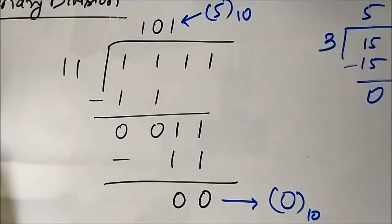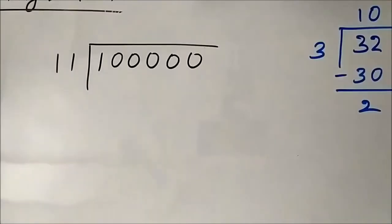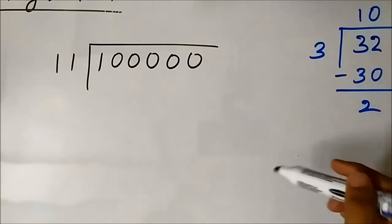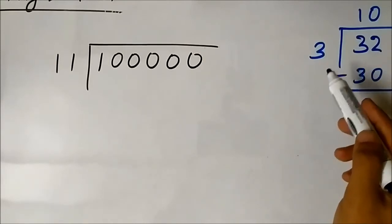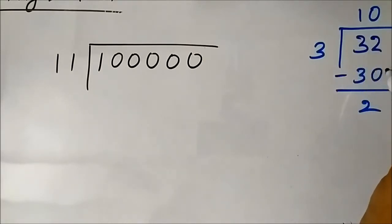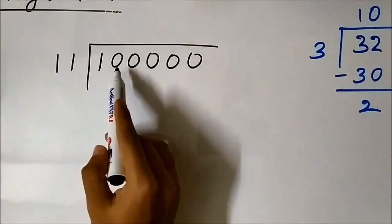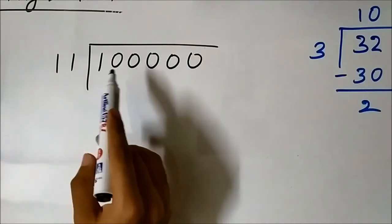Let us take another example: we will perform the division 32 divided by 3. In decimal, 3 times 10 is 30, and 32 minus 30 gives a remainder of 2, so the quotient is 10 and the remainder is 2. Now let us do the same in binary form. 32 in binary is 1 followed by five zeros, and 3 in binary is 1 1.